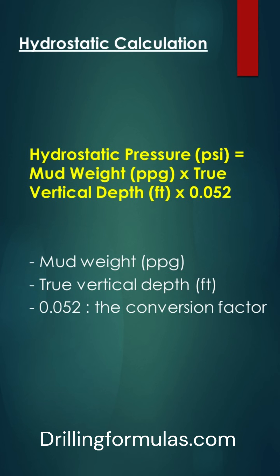True vertical depth signifies the vertical distance in feet from the reference point, such as a rig floor, to the desired point in the wellbore, regardless of the actual trajectory. 0.052 serves as a conversion factor utilized in U.S. oilfield units.